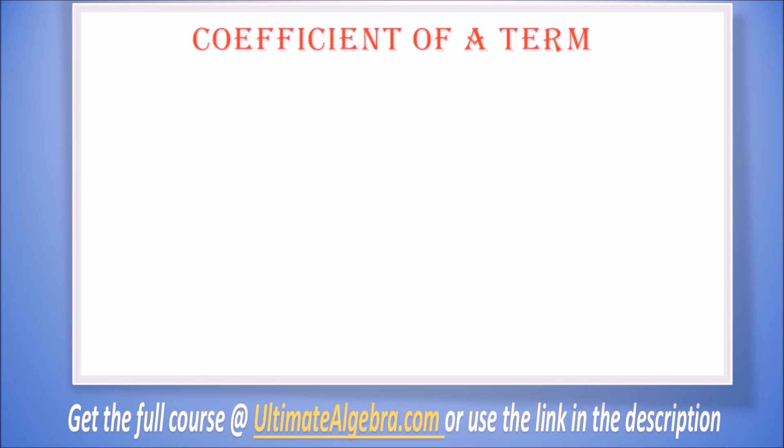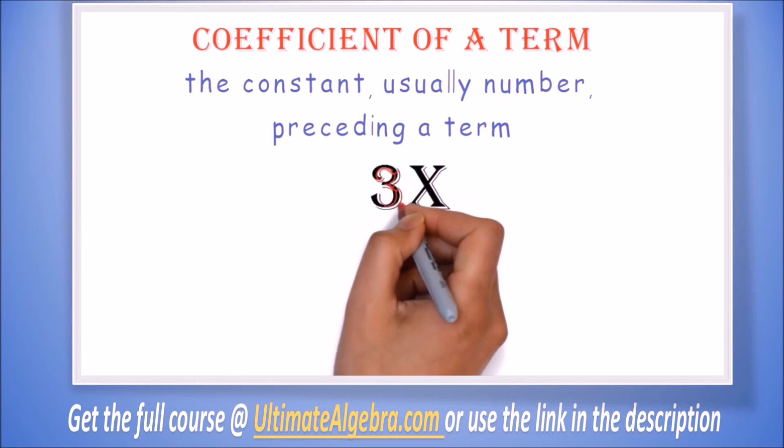Coefficient of a term: Now let's look at the coefficient of a term. The coefficient of a term is the constant, usually a number, preceding a term. So far we have been looking at the variables, now let's look at the number. If we look at a term 3x, the coefficient is 3 because 3 is the constant preceding the term.